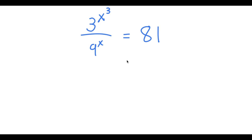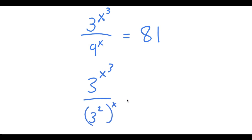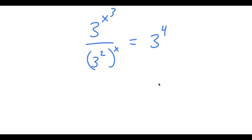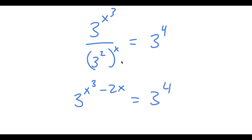So in this problem, I have 3 to the power of x cubed over 9 to the power of x is equal to 81. I'm going to first rewrite 9 to the power of x as 3 squared to the power of x, which equals 3 to the power of 2x, and rewrite 81 as 3 to the power of 4.